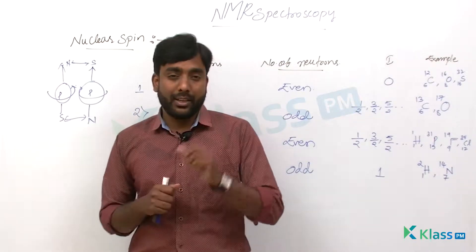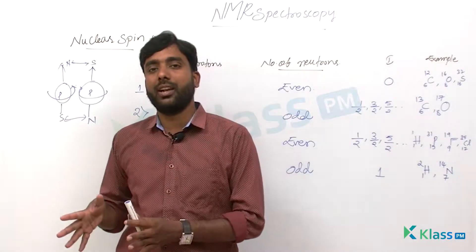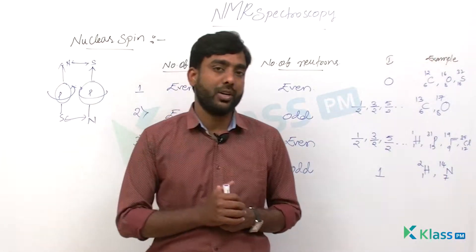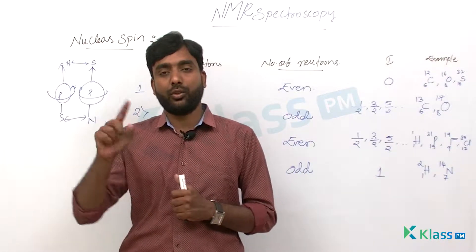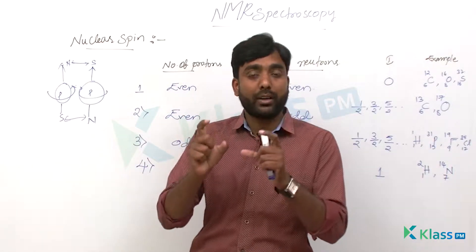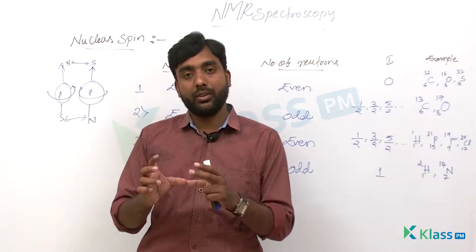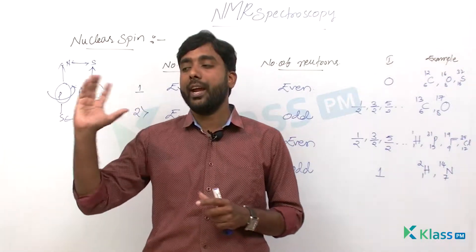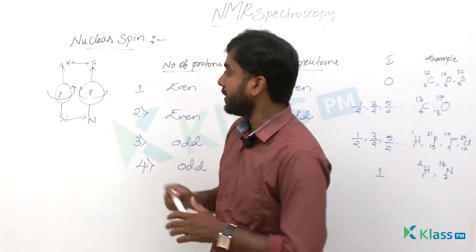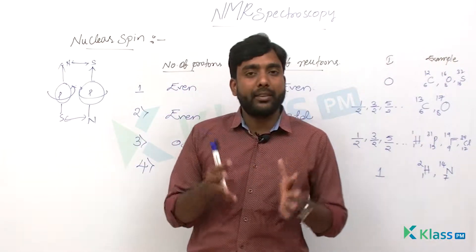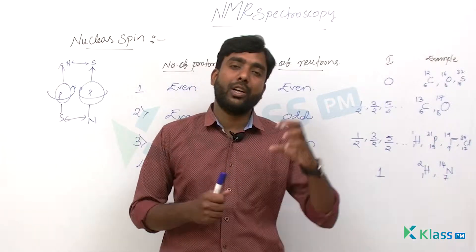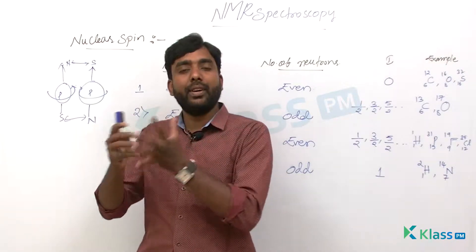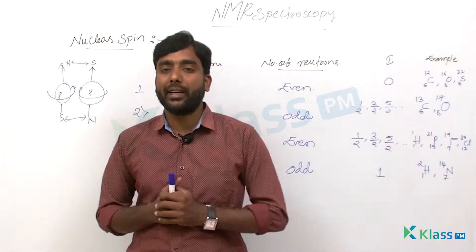The same thing happens with neutrons too. Even though a neutron is electrically neutral, it is not neutral because of absence of charge — it is neutral because the charges cancel each other, making the total charge zero. The quarks making up the neutron do carry charge, and that is why neutrons act like magnets producing an overall magnetic field. When two neutrons pair, both their magnetic fields cancel each other.